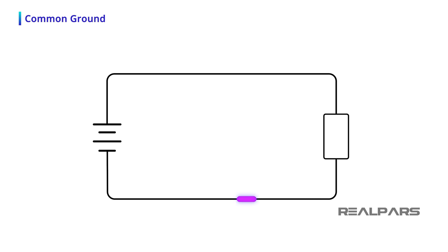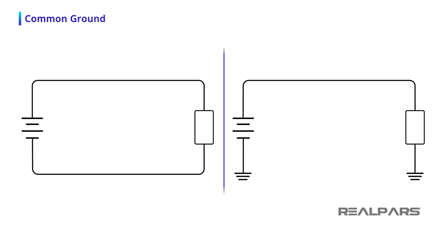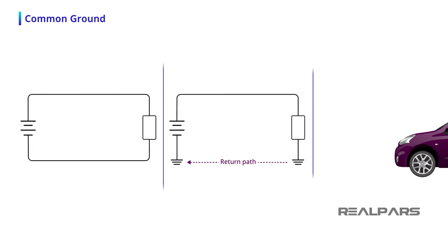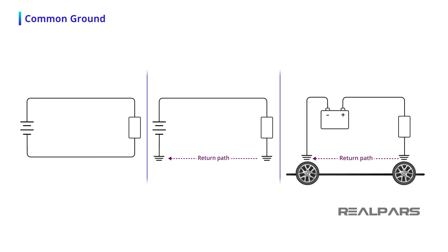As we said earlier, every electrical circuit needs to be complete for current to flow. In many applications, the common ground becomes the return path. For example, your car chassis is a common ground for the return current to the battery's negative terminal.